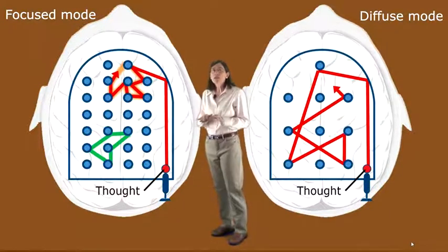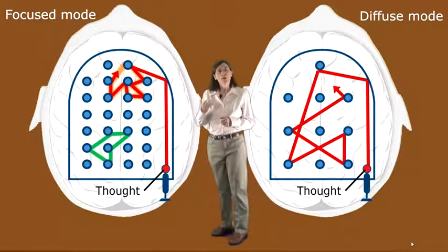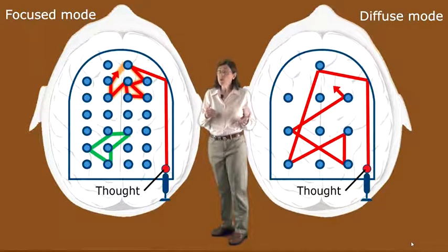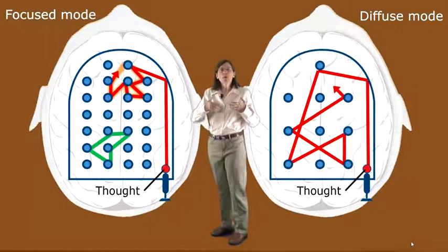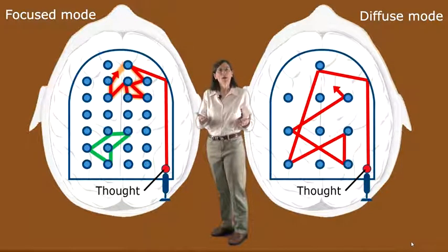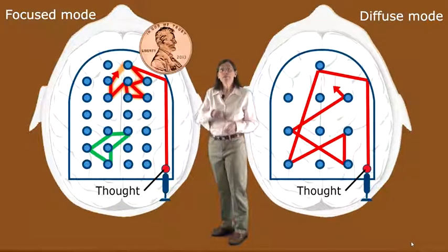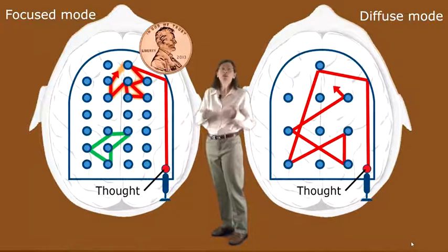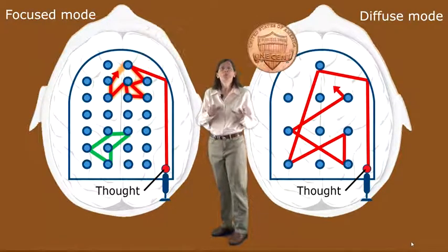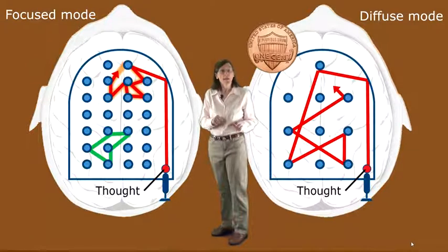Now, as far as neuroscientists know right now, you're either in the focus mode or the diffuse mode of thinking. It seems you can't be in both thinking modes at the same time. It's kind of like a coin. You can see either one side or the other side of the coin, but not both sides at the same time.